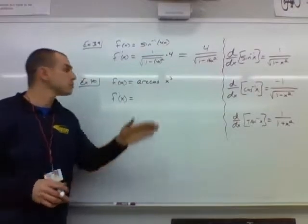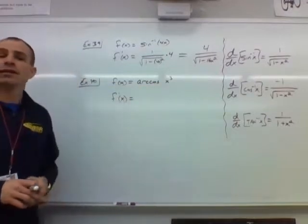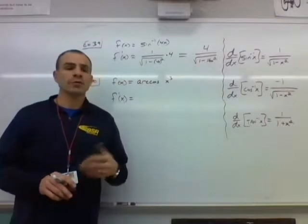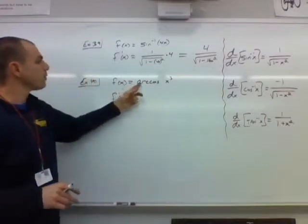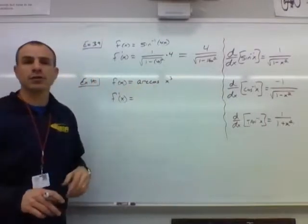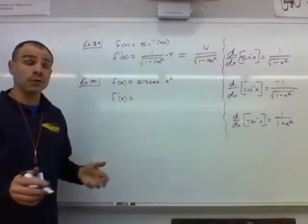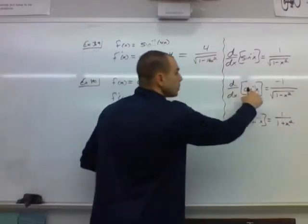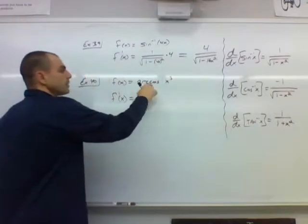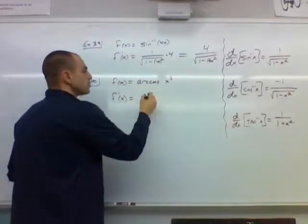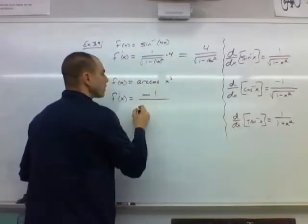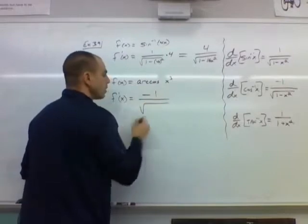Let's do the chain rule again, this time within the derivative of inverse cosine. So example number 40, we're looking for the derivative of arc cosine of x cubed. Same thing as before. Inverse cosine derivative, because that's the outer function. So negative 1 over square root of 1 minus.